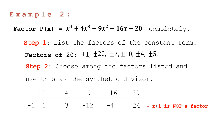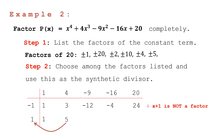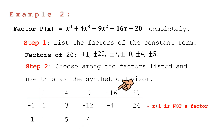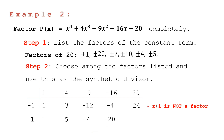Since the remainder is 24, x plus 1 is not a factor. Let's try positive 1. Bring down the leading coefficient, then: 1 times 1 equals 1; 1 plus 4 equals 5; 5 times 1 equals 5; 5 plus negative 9 equals negative 4; negative 4 times 1 equals negative 4; negative 4 plus negative 16 equals negative 20; negative 20 times 1 equals negative 20; negative 20 plus 20 equals 0.